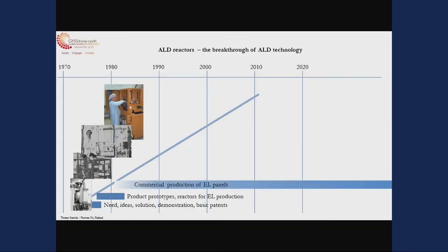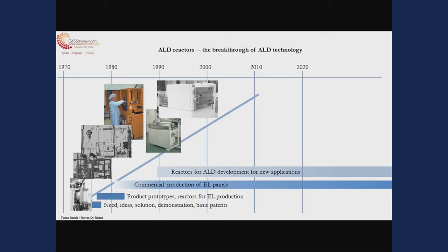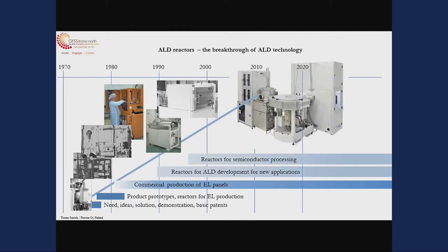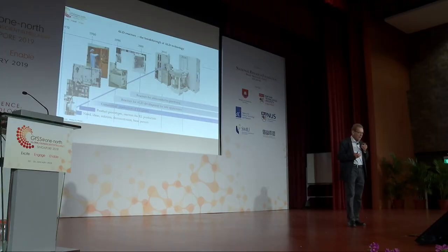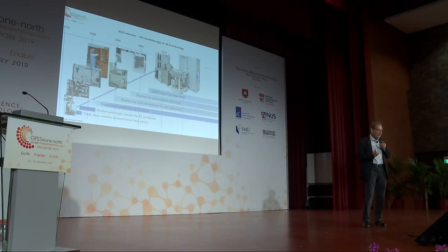Let's look at the reactors. The first generation reactors were for making the EL panels — this reactor started commercially in 1985. The next development step was for semiconductor applications during the 1990s. Today's reactors are very complex systems, which are part of the production line in semiconductor industry — so that's already a 40-year time span. ALD's impact on end products became meaningful in the case of semiconductors about 10 years ago, demonstrated in 2004 and commercially around 2007.